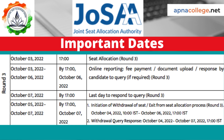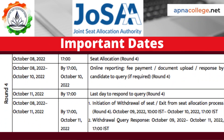From October 3, 2022 till 5 PM of October 6, 2022, online reporting including fees payment, document uploading, and response by candidate to queries raised by JOSA will be done. By October 7, 2022 at 5 PM, the candidate must respond to queries. From October 5 till October 7, 2022 at 5 PM, candidates can initiate withdrawal of seat or exit from the seat allocation process and respond to the withdrawal query. On October 8, 2022 at 5 PM, Round 4 seat allocation results will be displayed.